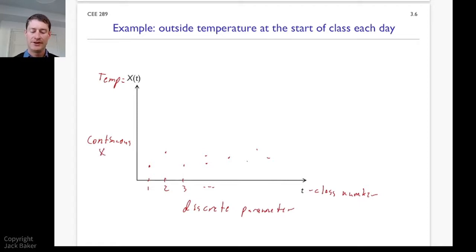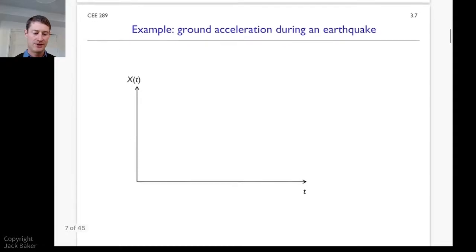So another example we could think about is what's the ground acceleration during an earthquake. So I've got t is time, and X of t is acceleration. And if we look at recordings of ground acceleration, I can do better than that. They look something like, maybe something like that in cartoon form.